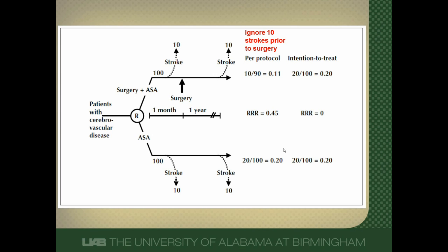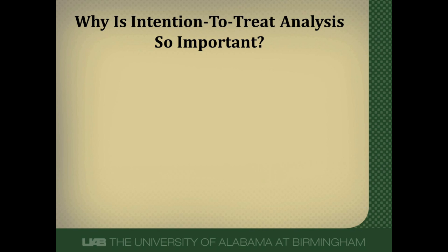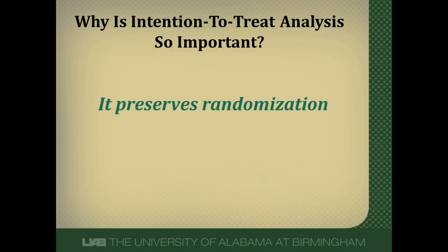Which one is right? In a superiority trial, intention-to-treat analysis is definitely the best and primary analysis we should do. The real reason for intention-to-treat analysis is that it preserves randomization. We randomized to equalize prognostic factors. If you start pulling people out of one group or the other, you'll wind up with groups that have imbalanced prognostic factors, and you'll have undone the whole benefit of randomization — of trying to make those two groups as similar as possible. The whole point is just to preserve randomization and keep those groups as equal as possible to see what effect the intervention has on the outcome.